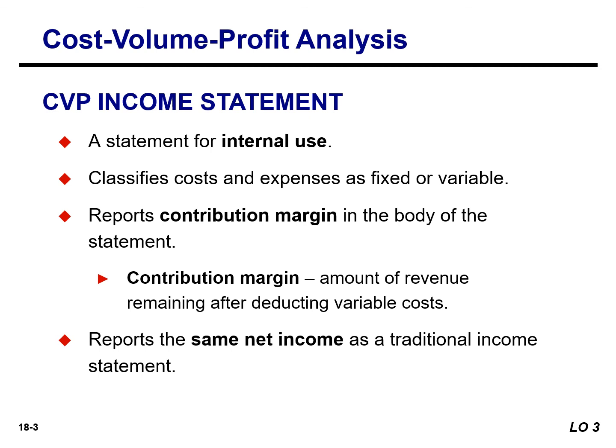Net income will be the same under either method when all units produced are sold. When you prepare a traditional income statement, you start with sales, subtract your cost of goods sold to arrive at gross profit, then subtract selling and administrative expenses to arrive at net income.